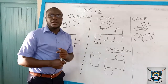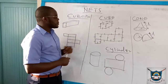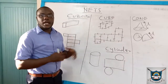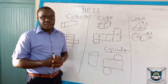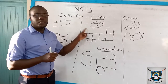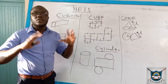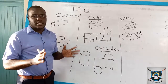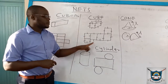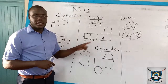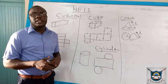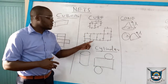Next we went to a cube. A cube and a cuboid are easily confused. However, a cuboid has all its sides equal. Therefore, the net also has all its sides equal.